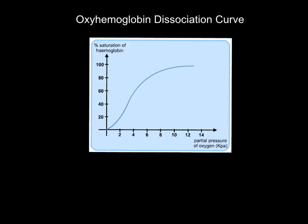What is this graph representing? As you can see, partial pressure of oxygen goes along the bottom - let's just say this represents the amount of oxygen in your body. On the vertical axis you've got zero to a hundred, because it's a percentage - the percentage saturation of hemoglobin. If I draw a line up and across, what we're saying is for that pressure of oxygen, 100% of it is combined with hemoglobin.